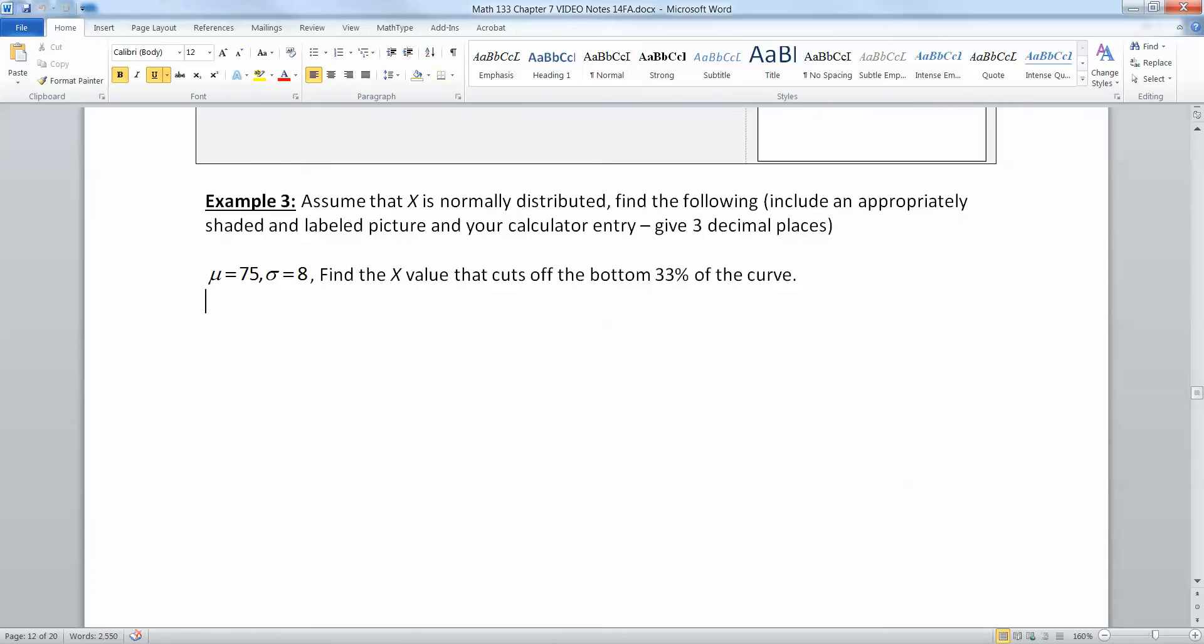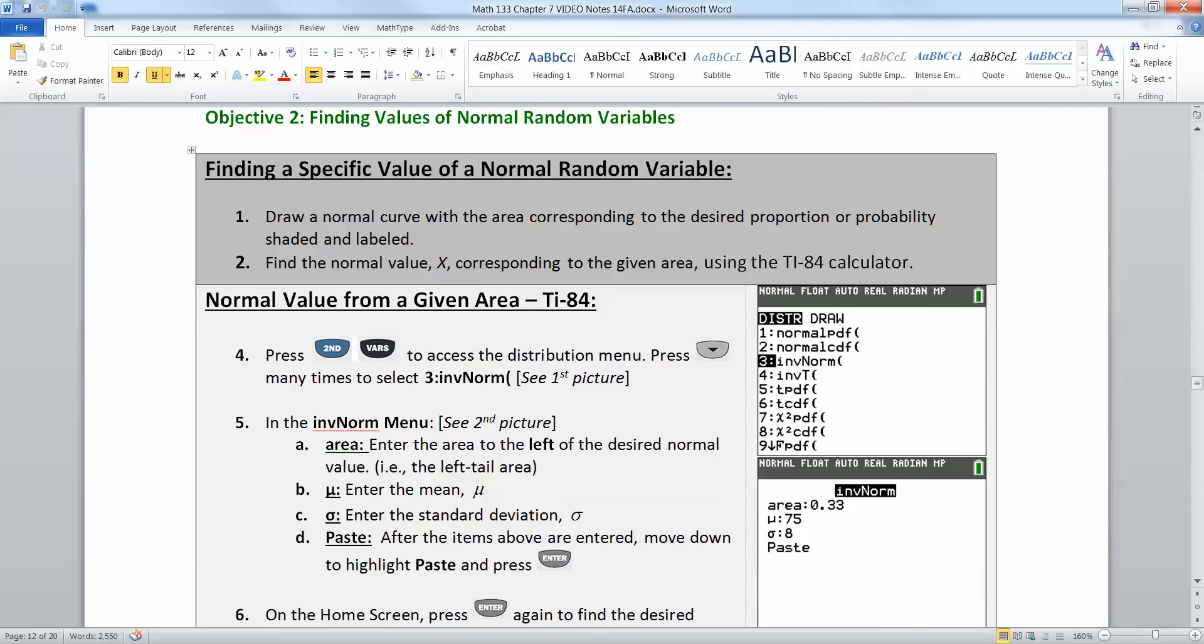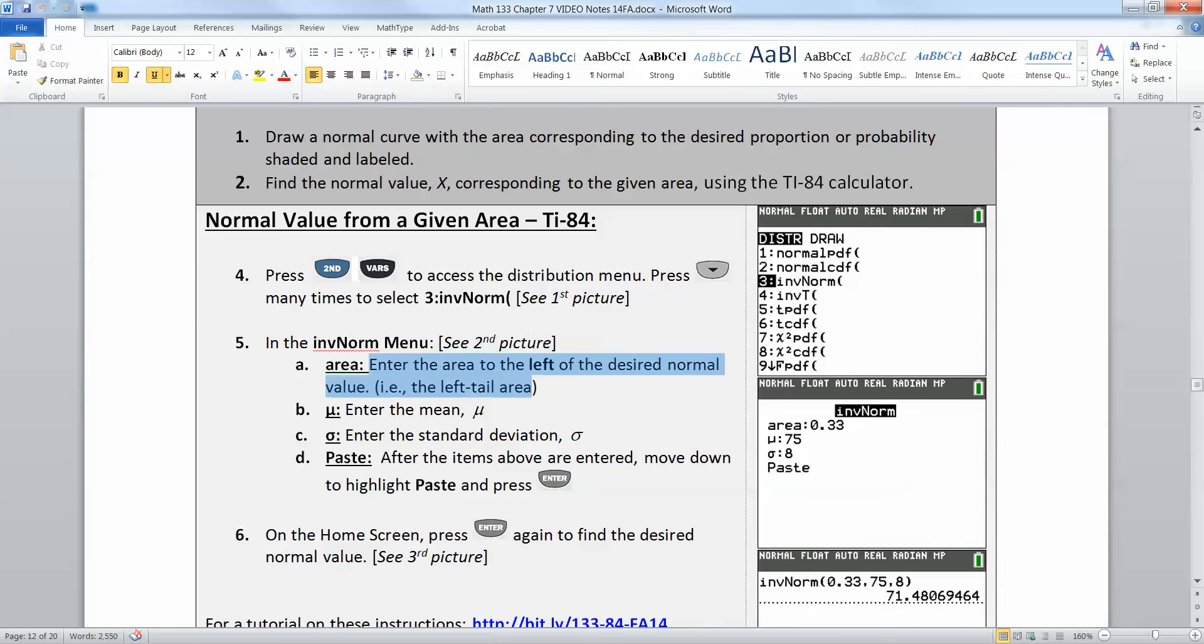So when you do this, the only thing to keep in mind is that the function we're going to use in the calculator, which is inverse norm, always works from the left tail, always. So it always has the left tail area in there. Right here is where I wrote that up. So if you keep that in mind, you'll never go wrong.